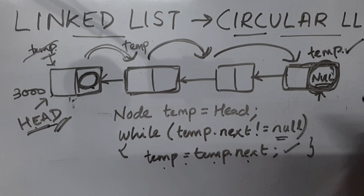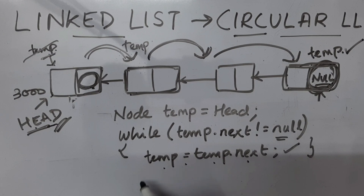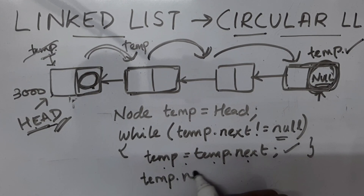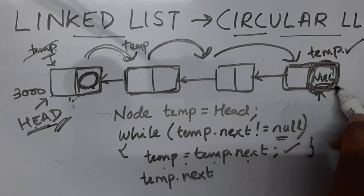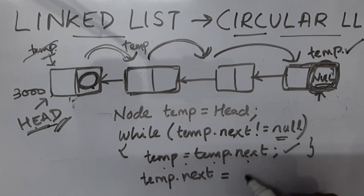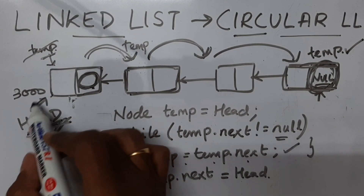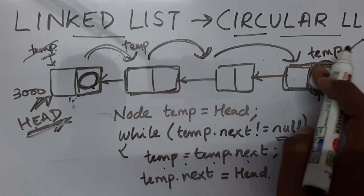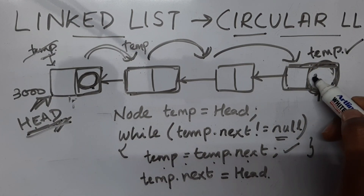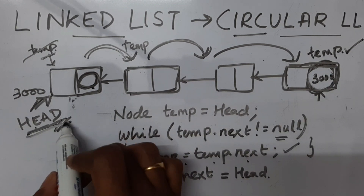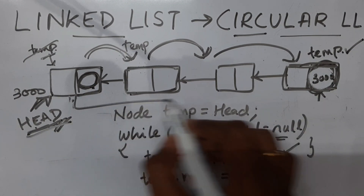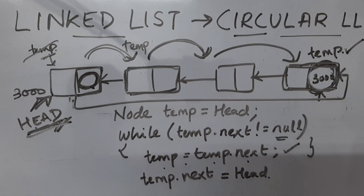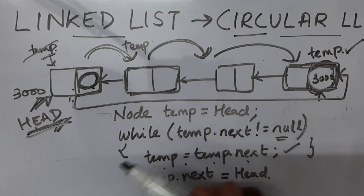Once temp has reached the last node, I'm going to say temp.next is now equal to head. Head stores the address of the first node, so null gets overwritten with the address of the first node. In this way, we have successfully linked the first and the last node, and now this linked list is called a circular linked list.